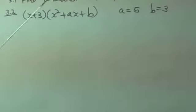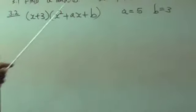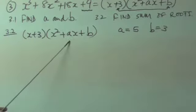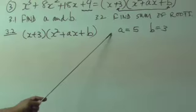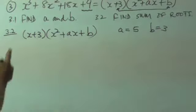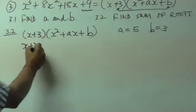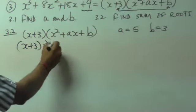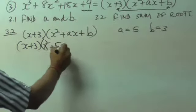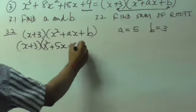All right, we're doing 3.2. In 3.2, we've got x plus 3, there's x plus 3, and there's a second part over here. But we have found the values of a and b, so this question will now change to x plus 3 into x squared plus 5x plus 3.